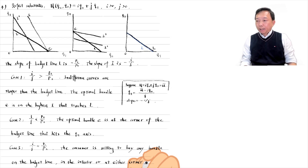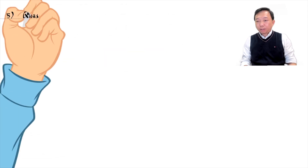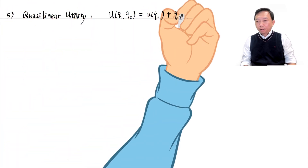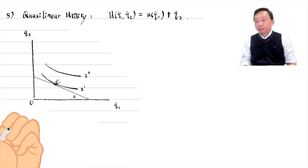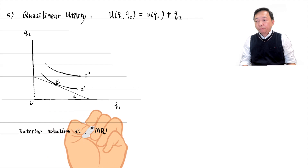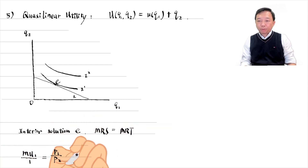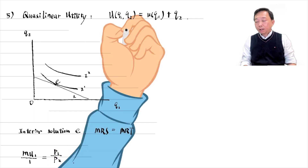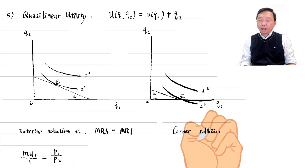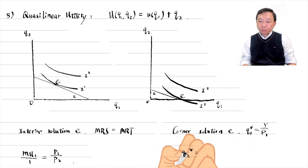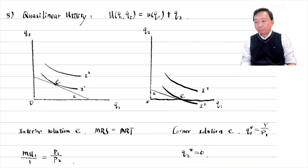Next, let's consider the quasilinear utility function. The optimal bundle is either an interior solution or a corner solution, depending on the income. If income is high enough, the indifference curve is tangent to the budget line and the consumer purchases positive quantities of both goods. If income is low, the consumer has a corner solution where she spends her entire income on Q1.